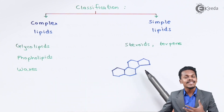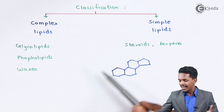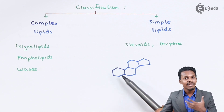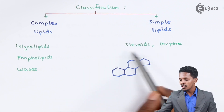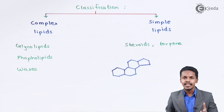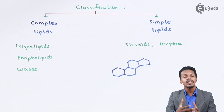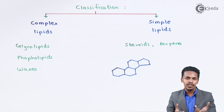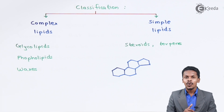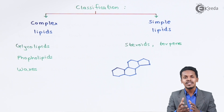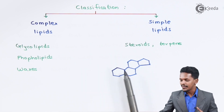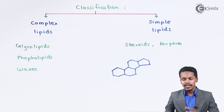This kind of structure is known as the cyclopenta perhydro phenanthrene structure, which is the common structure found in cholesterol and steroids. Steroids are further classified into zoosterol (animal cholesterol), phytosterol (plant cholesterol), and ergosterol, which is present in fungi.